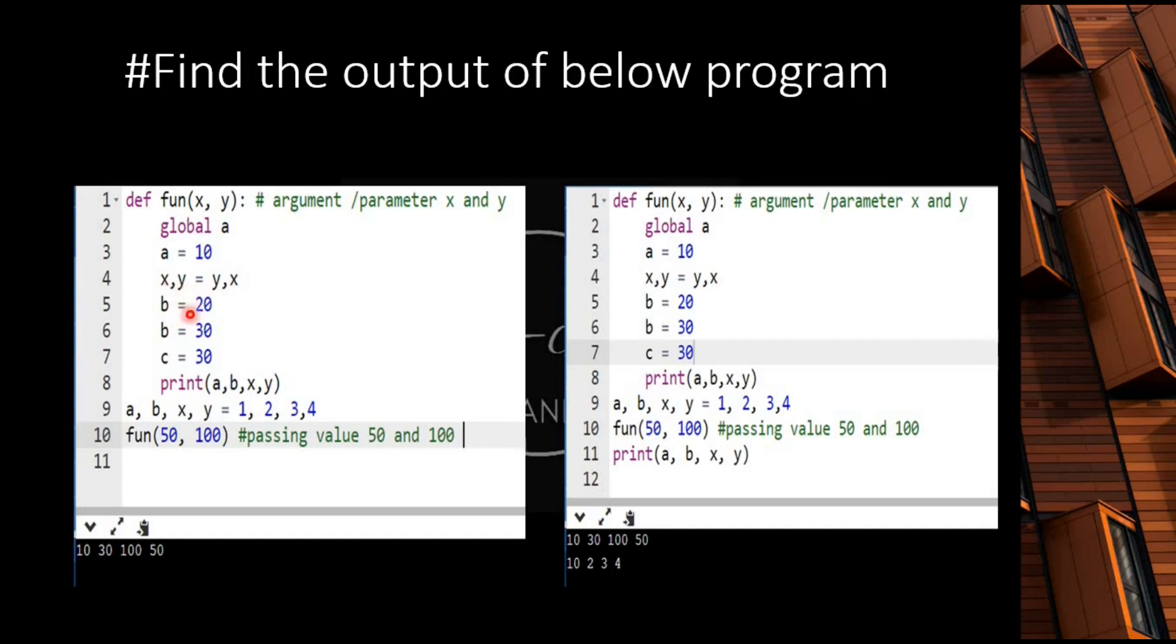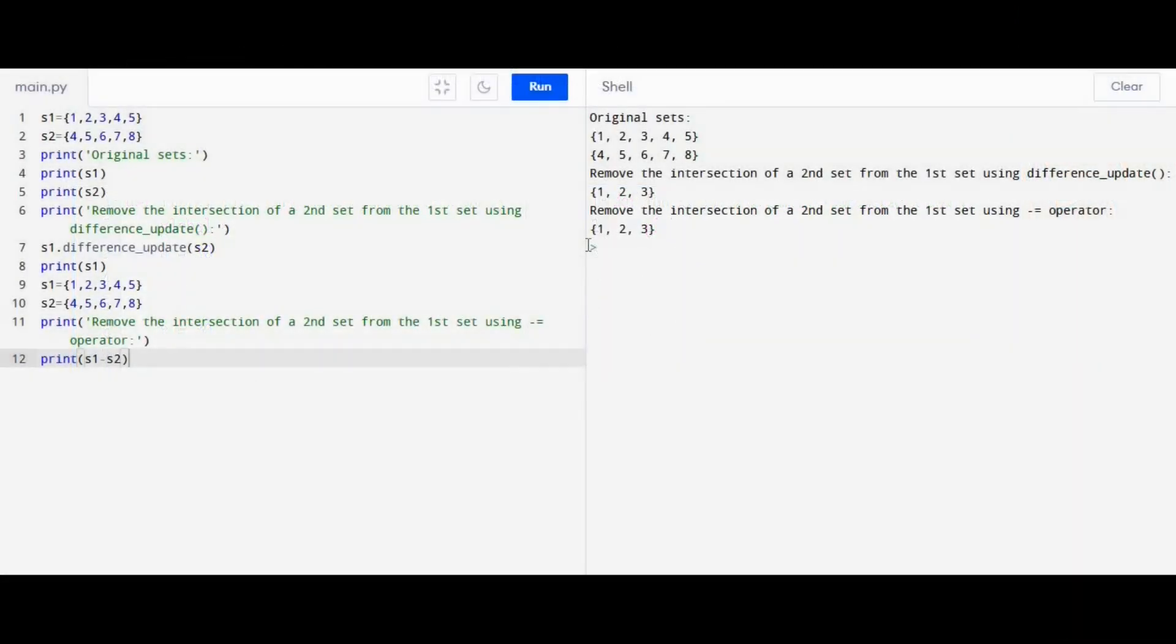So this is this. Then we have to change the value to 30, then we have to declare 30 b or c, and we have to keep these simple variables here. This is the program to remove intersection of second set from the first one. So they have to change the data collection of second set.